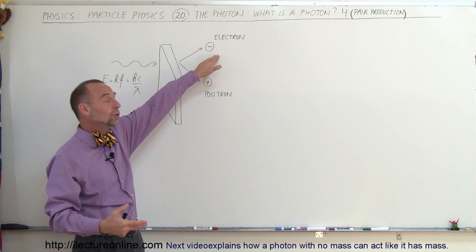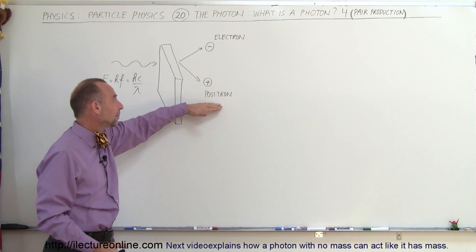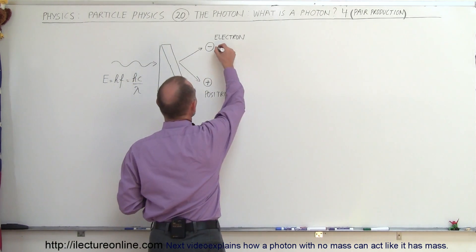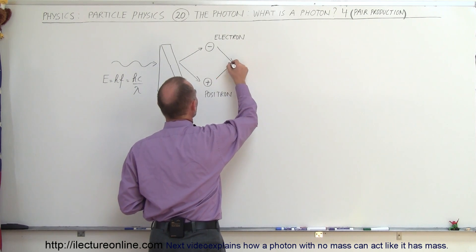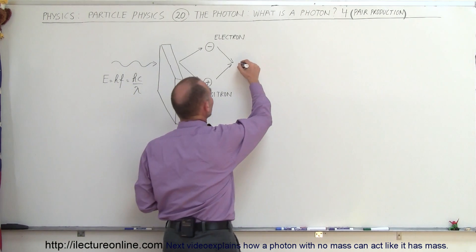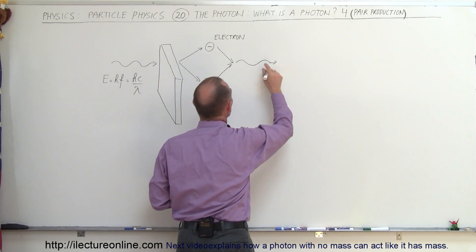So this is the electron that we're used to, and this is the positron, which is the antiparticle of the electron. Now what happens when an electron meets up with a positron and they meet and merge together? Well, what happens is they annihilate each other and they will turn themselves back into a photon.